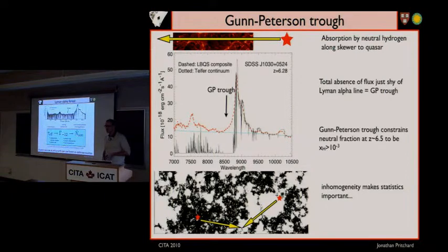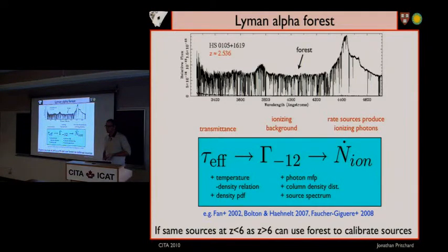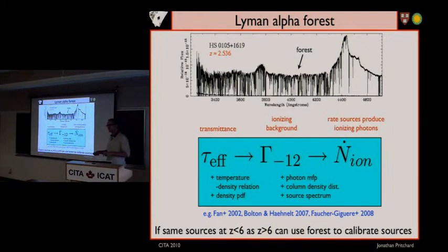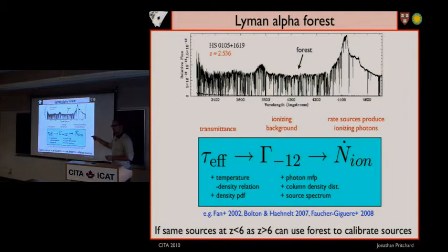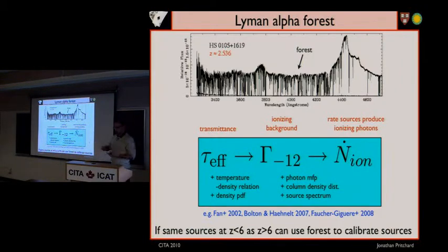You can make further assumptions to connect that ionizing background to the rate at which sources are actually producing ionizing photons at redshifts greater than six, and use this to begin to constrain reionization. The temperature-density relationship comes in here — you're assuming the gas is in photo-ionization equilibrium, so you fix the ionization background, and then you have some recombination rate which determines the fraction of neutral hydrogen left. The recombination rate is quite sensitive to temperature, and so the statistics of these lines depend on assumptions about both temperature and density.